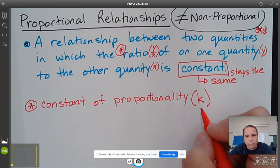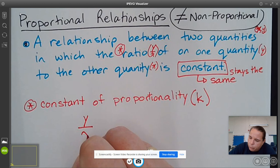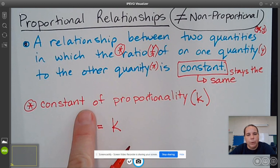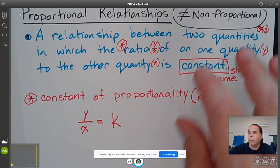So the constant of proportionality, which is the same thing as this ratio, is K. So we could write it like this, that Y over X equals K. Because whatever this ratio is, this is going to be what the K is for that relationship.